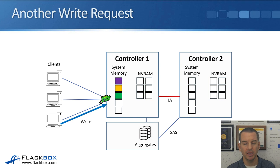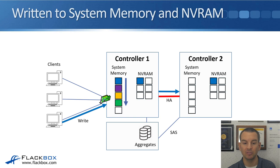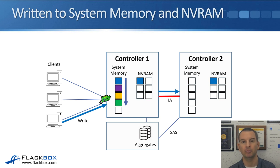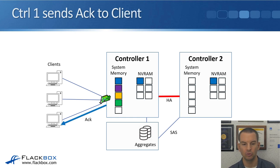There's another write request — blue data this time. As expected, the data gets written into system memory on Controller 1, going into the top slot with everything else bumped down a slot, and the data also gets written to NVRAM on Controller 1 and Controller 2. Controller 1 sends it over to Controller 2 over the HA connection. Once written to NVRAM on Controller 2, Controller 2 sends the acknowledgement back, and then Controller 1 sends the acknowledgement to the client.